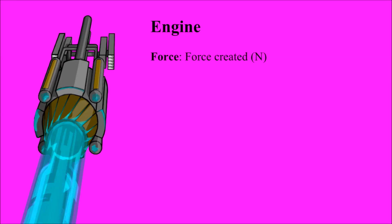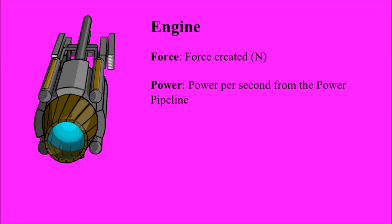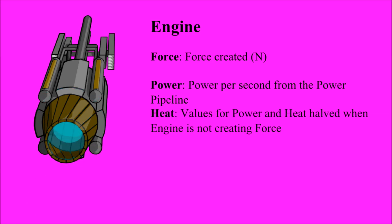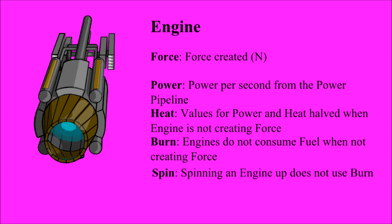Engines are the primary means of locomotion for ships. Engines create force. The value for force is in newtons because it's easy to determine acceleration as mass is measured in kilograms. Engines consume power, measured in units per second from the power pipeline. Engines also create heat. The values listed for power and heat are halved when the engine is not creating force, but having an engine spun up creates heat and costs power. Engines only burn when they are creating force. The engines don't combust the fuel — it's used for reaction mass. They accelerate the reaction mass and throw it out to create force. Burn means it's spent; you can't have it back. Engines also have the spin attribute, so they have to be spun up to create force. Merely having the engine spun up, even to 100%, will not cause burn.